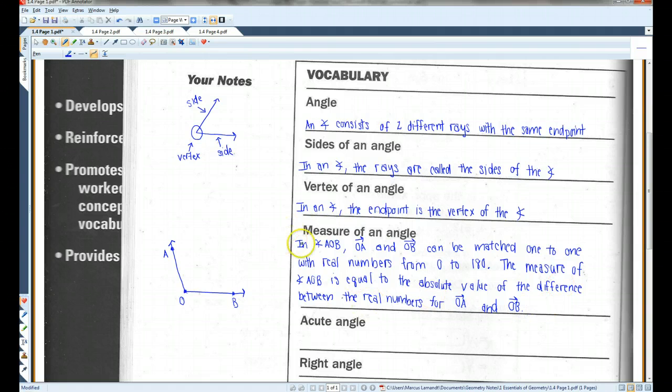A couple notation things I would like to point out. In angle AOB, when you name an angle, you're generally going to be using three letters. You can use one letter in certain circumstances, but in this case we're going to be using three letters. Angle AOB, the O, because O is the vertex, O has to be in the middle. You could call it angle BOA instead. So, angle AOB or BOA is fine, as long as the O, the vertex, is in the middle.